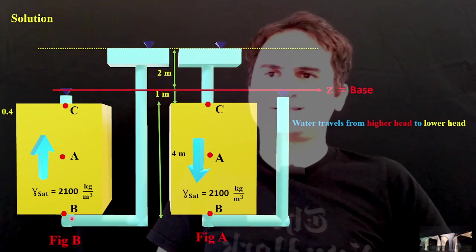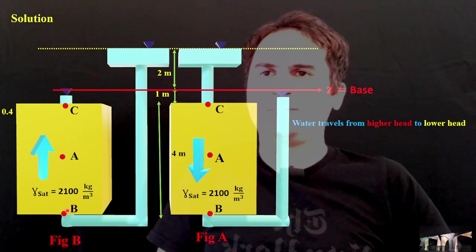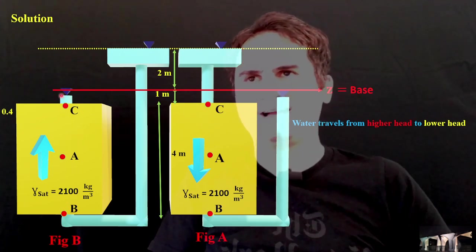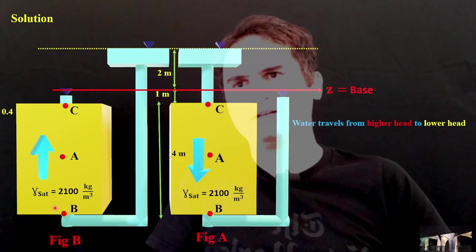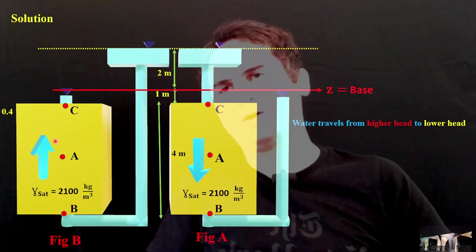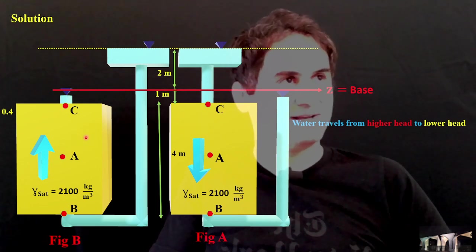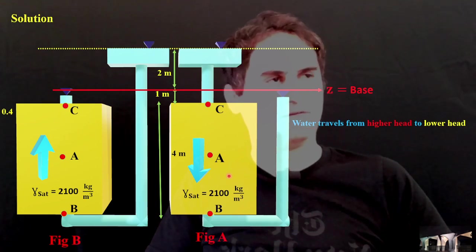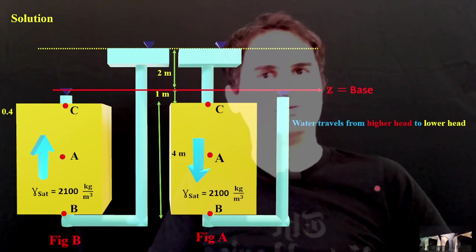And if you just move to figure B, you can easily see figure point B has this much of water, and point C has this amount of water. Definitely, the head of water at B is higher than C, so we have upward seepage. That's what we can investigate by our eyes. Let's verify our intuition.